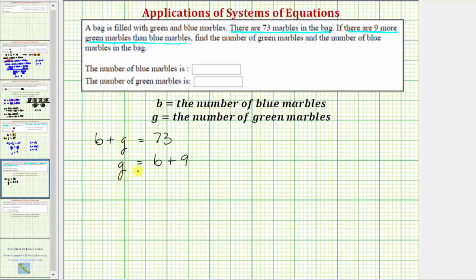So because g equals b plus nine, we'll substitute b plus nine for g in the first equation. This will give us one equation with one unknown. Performing the substitution, we'd have b plus g, which is b plus nine, equals seventy-three.